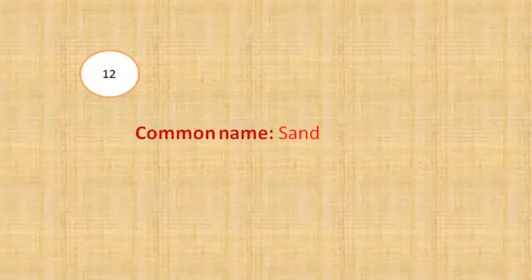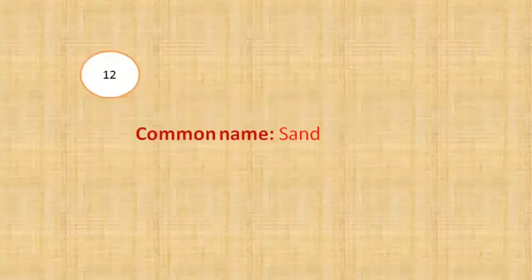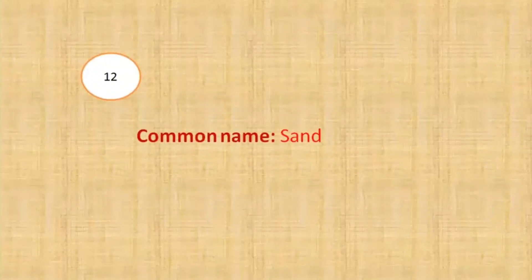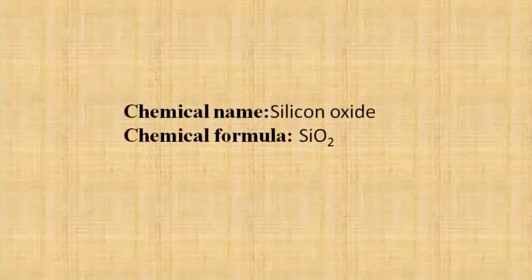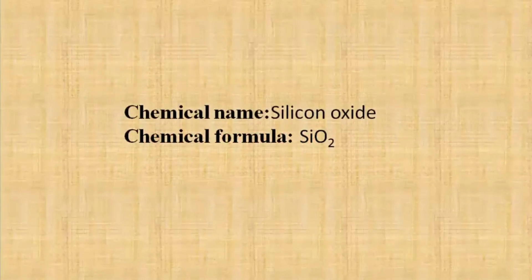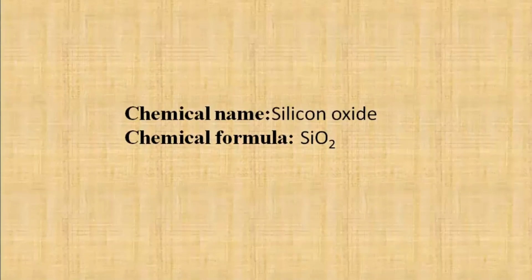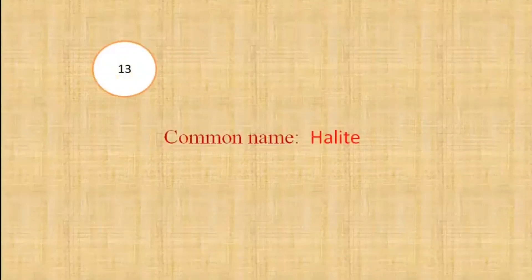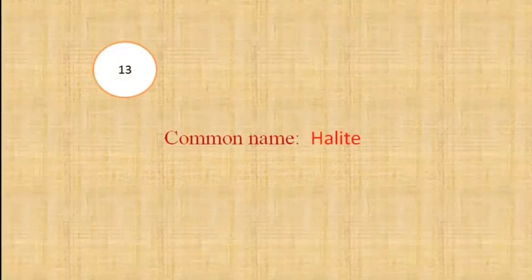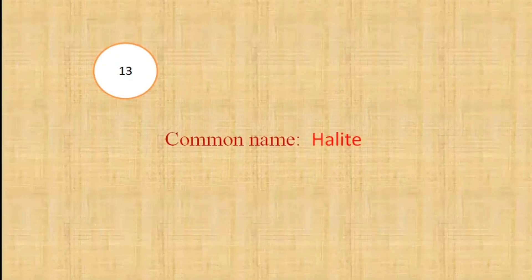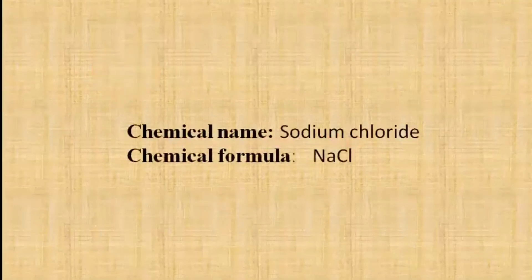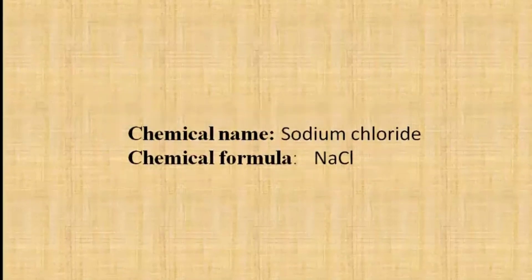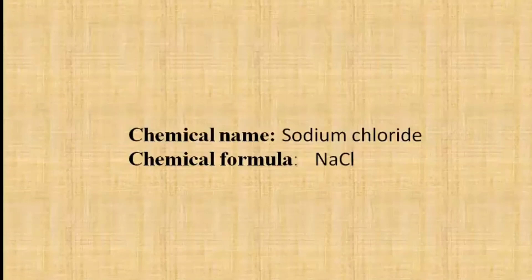Our next question is the chemical formula of sand. The chemical formula of sand is SiO2 and its chemical name is silicon oxide. Our next question is the chemical name of halite. Sodium chloride. It is also known as table salt or common salt. Its chemical formula all you know is NaCl.